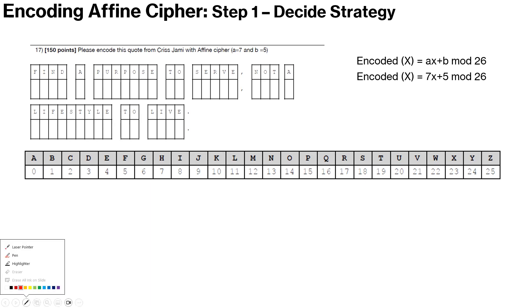So step one, what we have here is that we know that this encoded x, the generic formula for that is ax plus b mod 26, where x refers to the value of the alphabet from this table. So for U, the x would be 20. So for this specific cipher, we are given a equal to seven and b equal to five. So that's what we will use. This is the specific formula for this encoding. So let's get started.